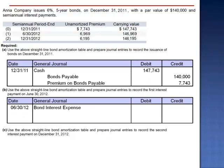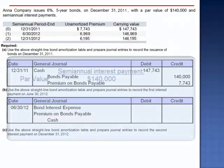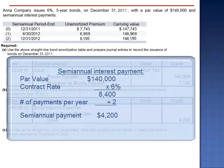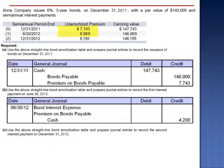The journal entry is a debit to bond interest expense, a debit to premium on bonds payable to show the decrease to the liability, and a credit to cash for the amount of the semi-annual payments. The credit to cash equals the bonds' par value, $140,000, multiplied by the contract rate of 6%, divided by 2, which is $4,200. The unamortized premium drops from $7,743 down to $6,969, a decrease of $774, so we debit premium on bonds payable for $774.